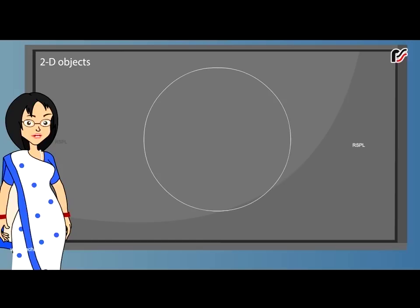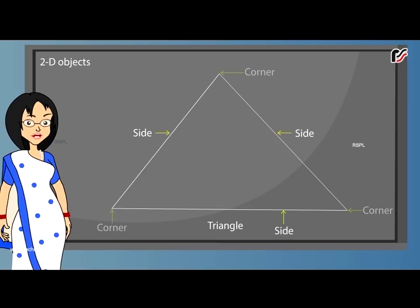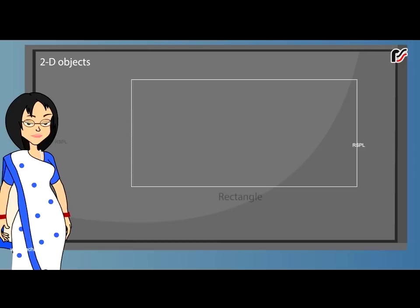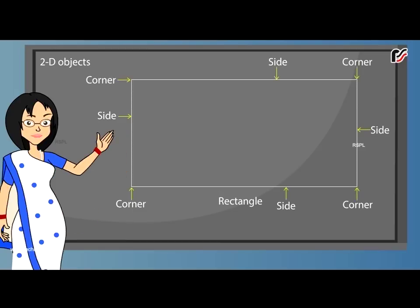2D objects: This is a circle. It has no sides and no corners. This is a triangle. It has three sides and three corners. This is a rectangle. It has four sides and four corners. Its opposite sides are equal in length.